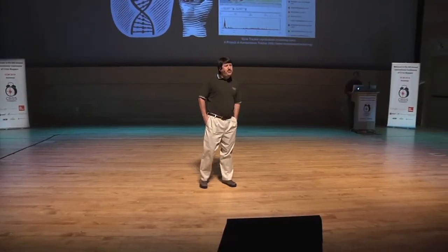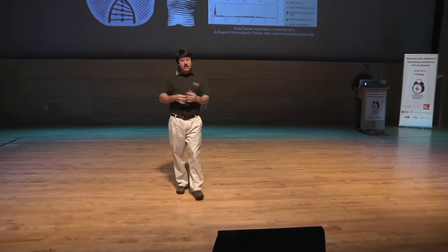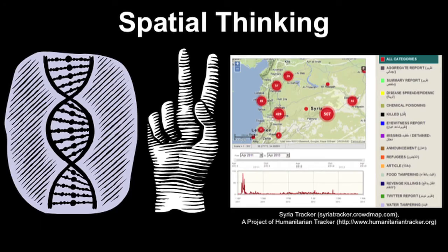I'm going to talk to you today about spatial thinking. Spatial thinking is something we use all the time. For example, the discovery of DNA's double helix structure, using our fingers to count numbers, or a geographic map to support a crisis response.